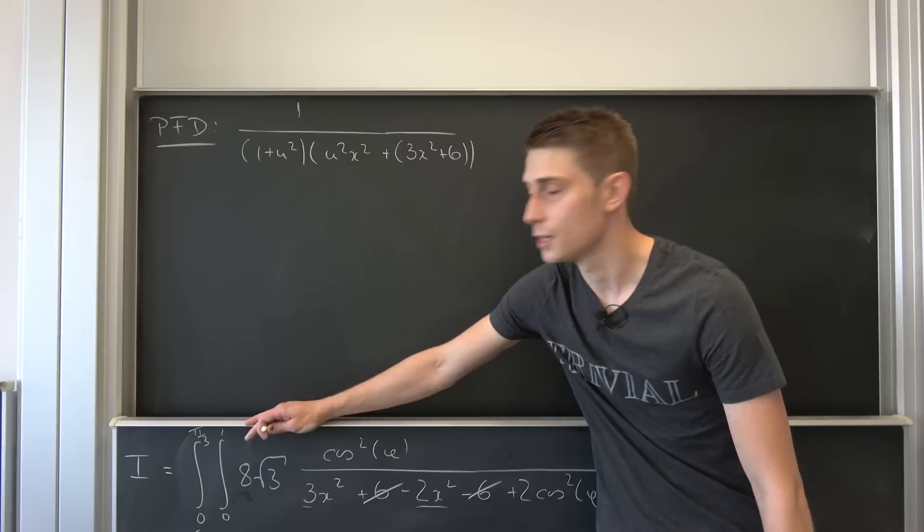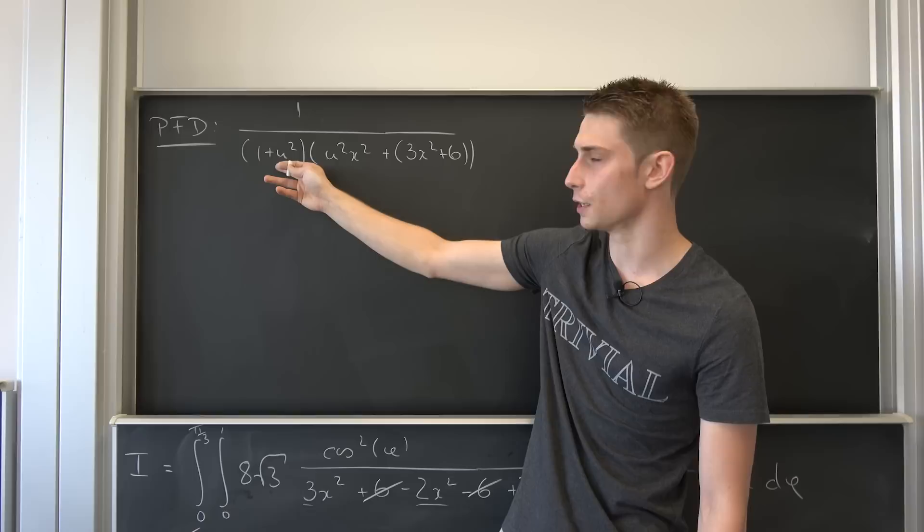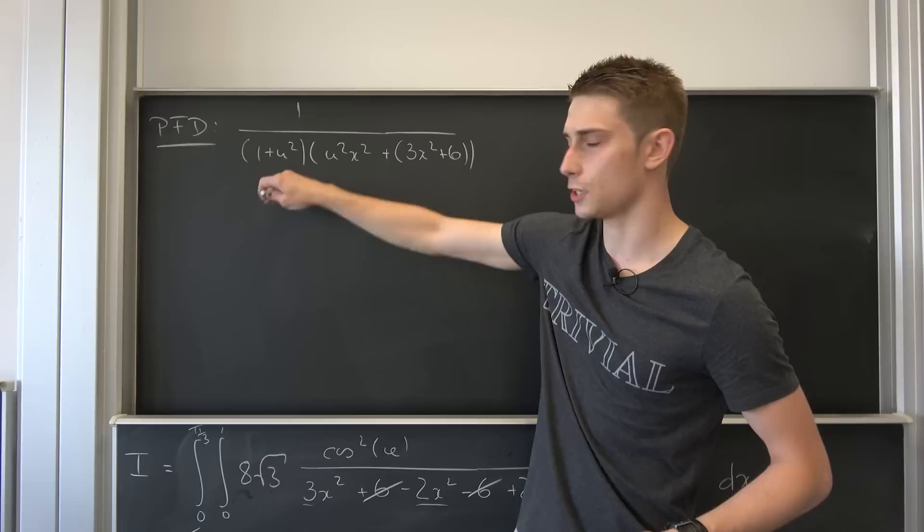You see we just have those quadratics with respect to u right here, but the thing is we don't really have a u times something term. So why not make everything simpler and say that u squared is nothing but lambda. Let's be dope right here.